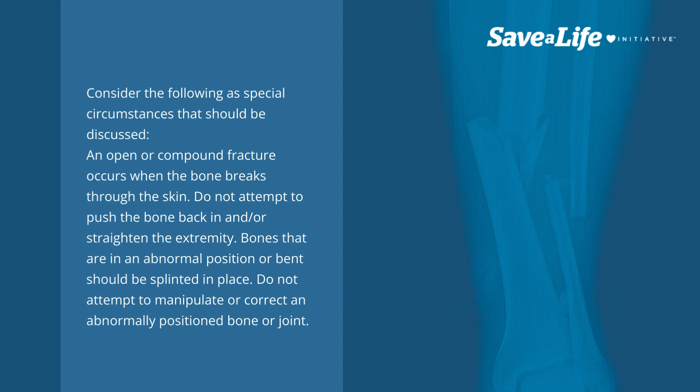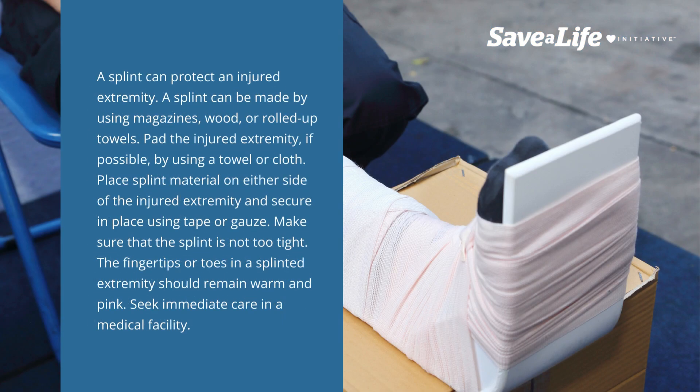Do not attempt to manipulate or correct an abnormally positioned bone or joint. A splint can protect an injured extremity and can be made using magazines, wood, or rolled-up towels. Pad the injured extremity if possible using a towel or cloth. Place splint material on either side of the injured extremity and secure in place using tape or gauze. Make sure that the splint is not too tight.